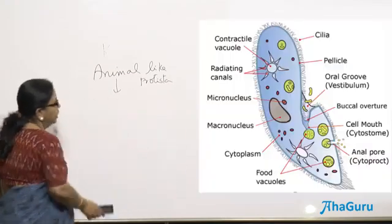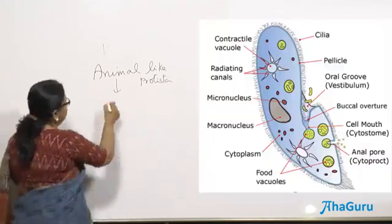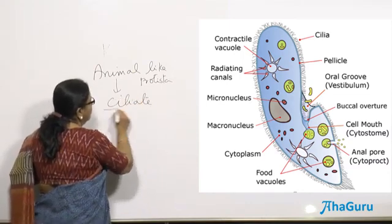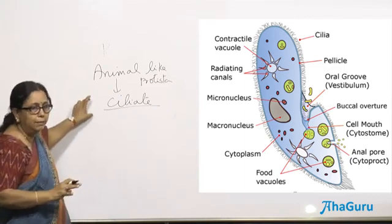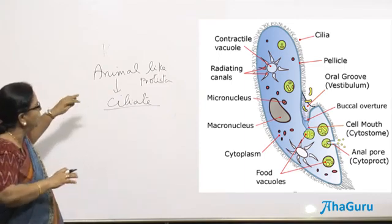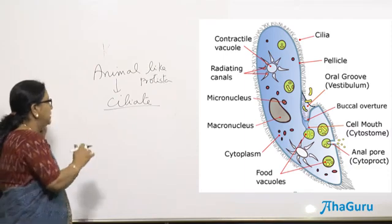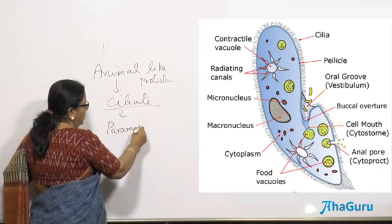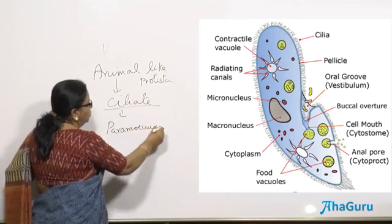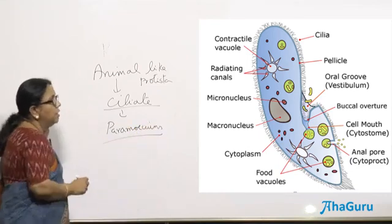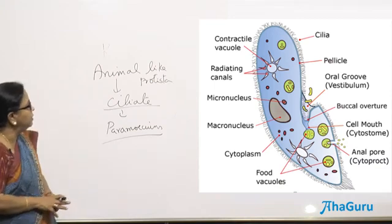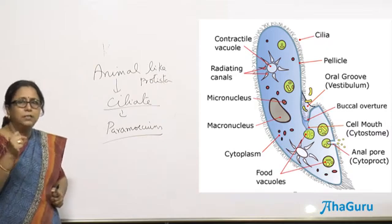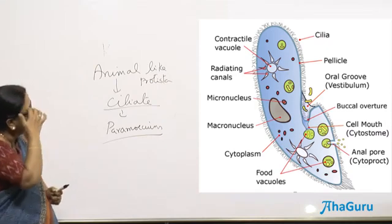Another group of animal-like protists is known as ciliates. As the name indicates, the organ of locomotion here is cilia. They have many cilia. The best example is paramecium, the slipper-shaped animalcule. Paramecium is the cell that shows the highest degree of specialization. If you look at it, it has two nuclei.